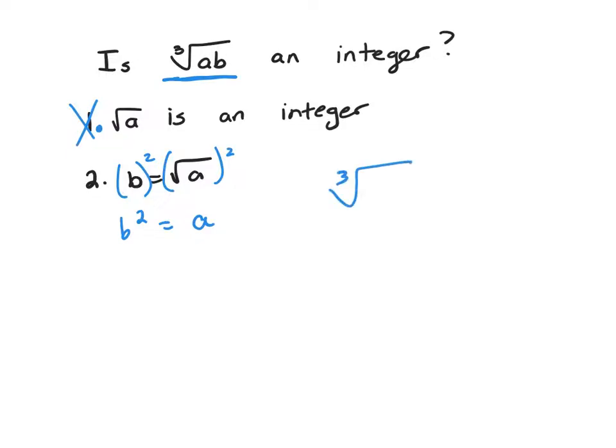Now, let's look at the cube root of ab. This is the cube root of - we're going to let a be b squared times b.